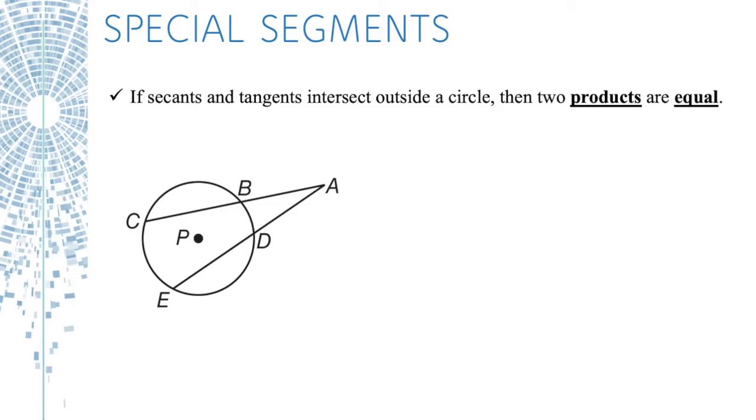If secants and tangents intersect outside a circle, then two products are equal. Well, which two products? Hold that thought for just a second and let me show you something.